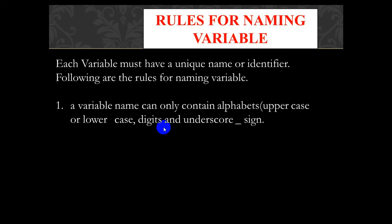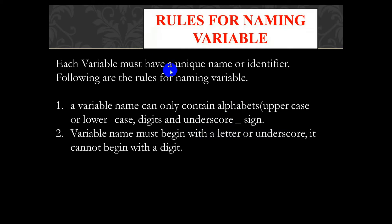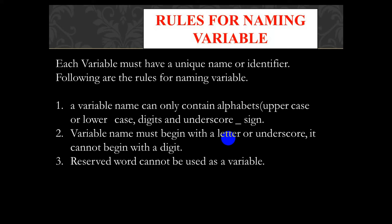A variable name can only contain alphabets — uppercase or lowercase — digits, and an underscore sign. So the combination must be of lower or uppercase letters, digits, and underscore. But a variable name must begin with a letter or underscore; it cannot begin with a digit like 1, 2, or 3.